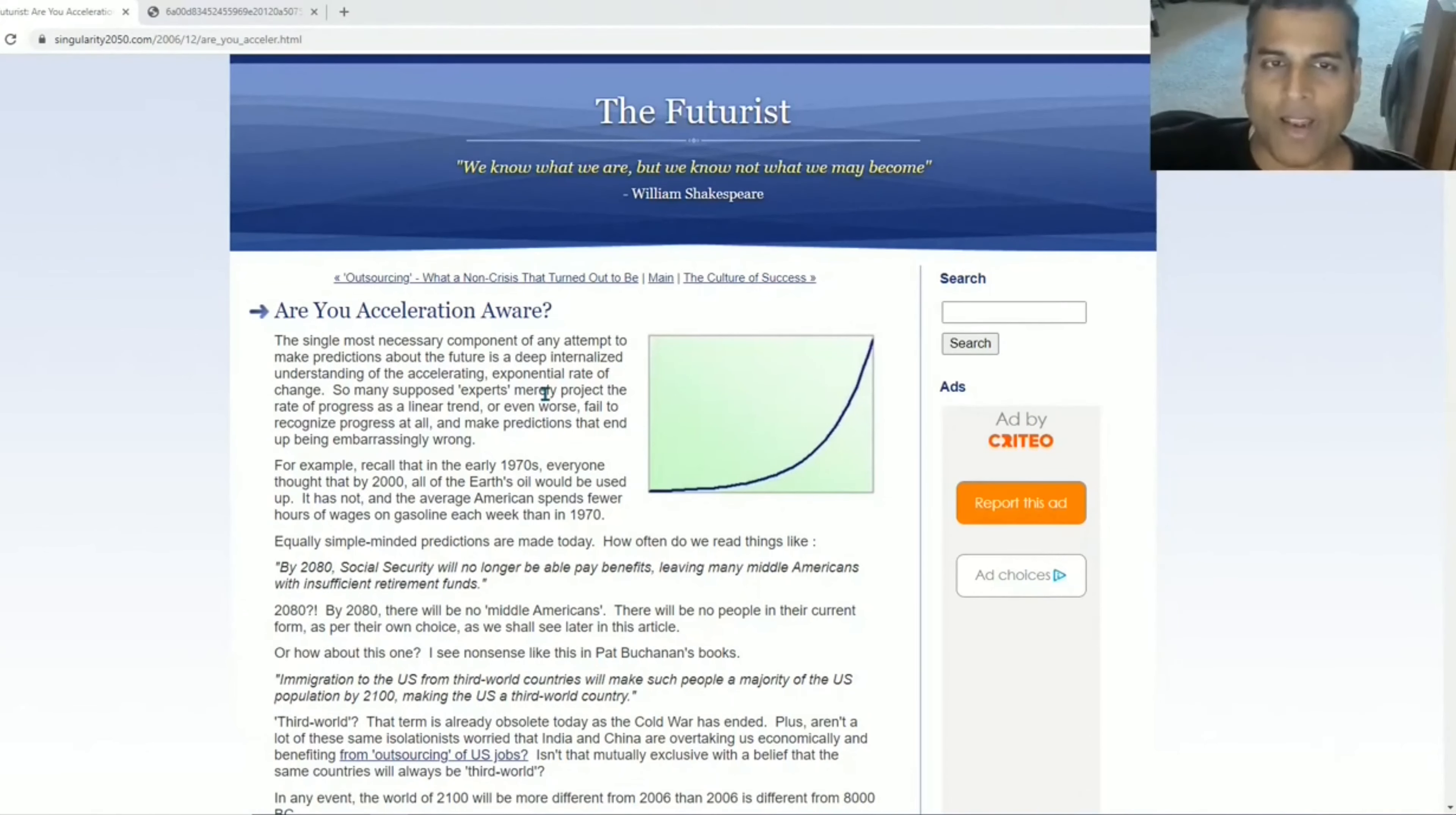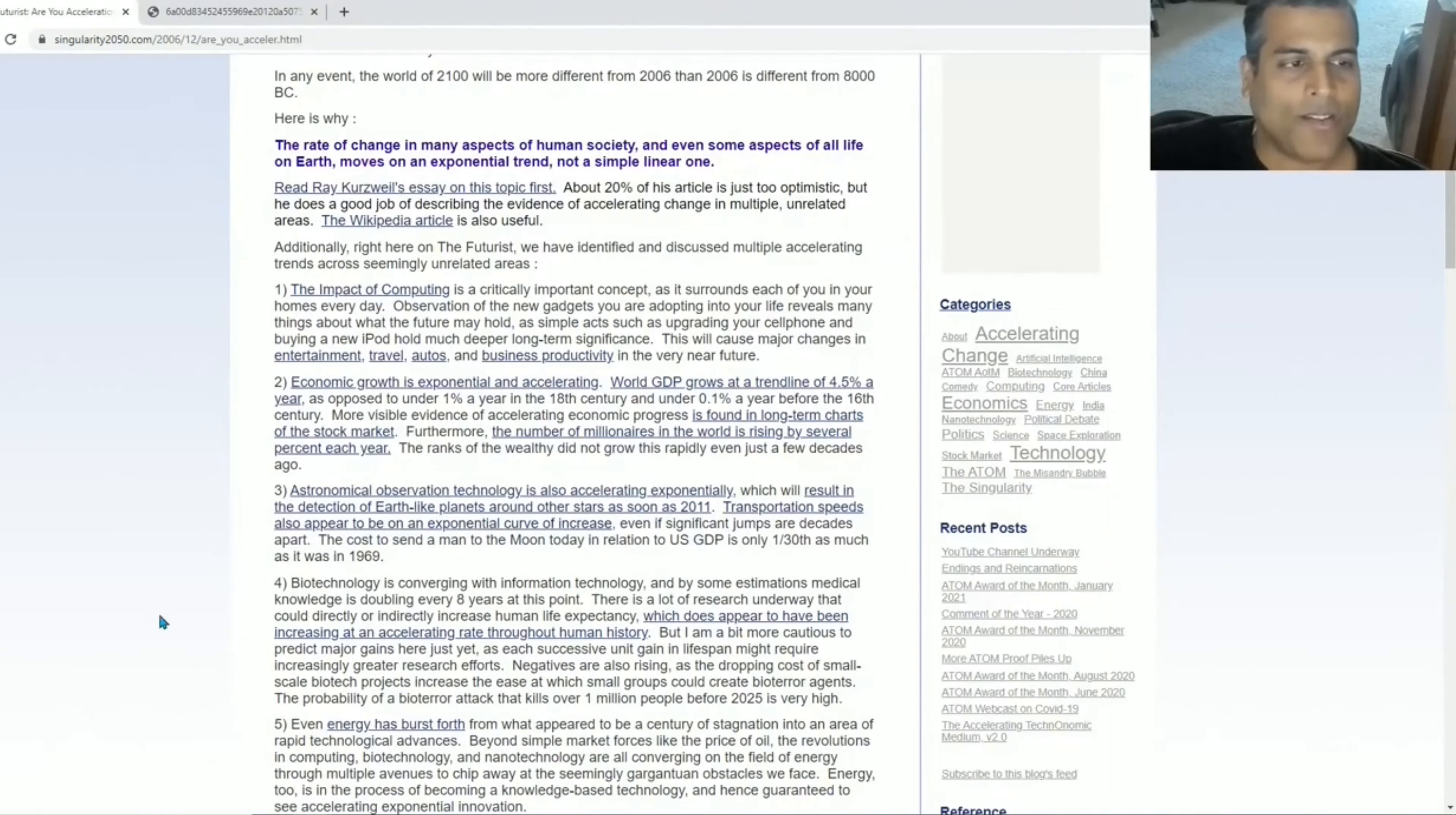In that blog, there was an article written way back in 2006 about how a person can tell if they're acceleration aware. This is in the description box below. I speak about how government budgeting tends to project things out under a linear rate of extrapolation rather than an exponential one, and the fallacy of that type of thinking. The rate of change in many aspects of human society, and even some aspects of all life on earth, moves on an exponential trend, not a simple linear one.